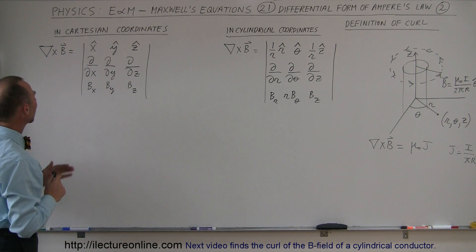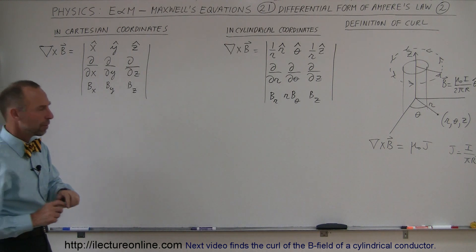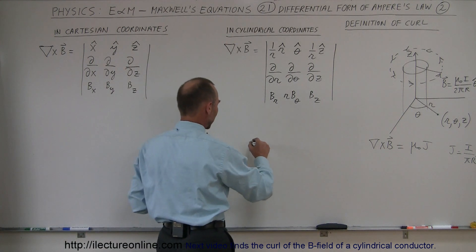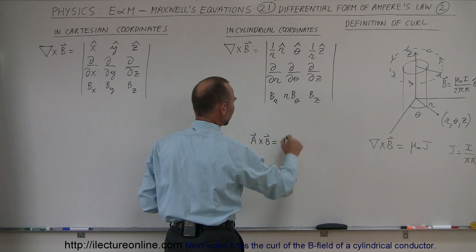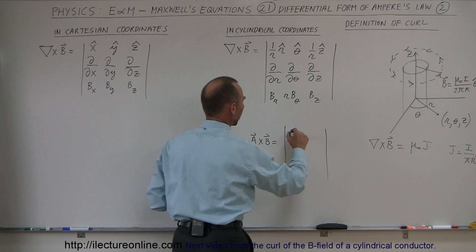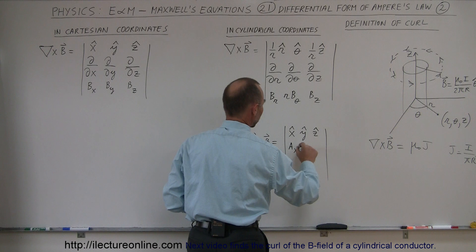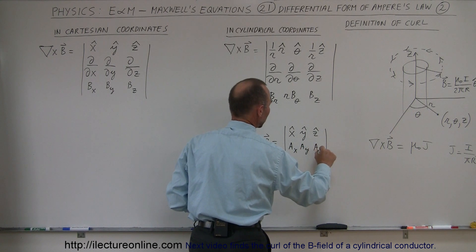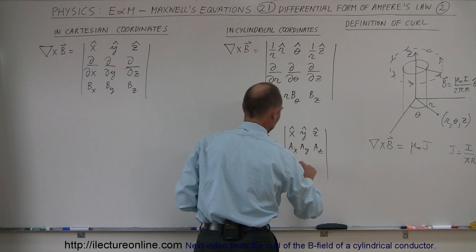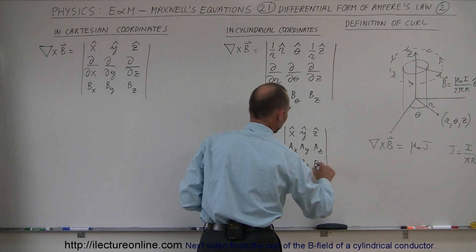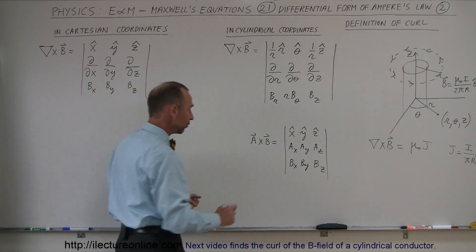You should realize that taking the curl is kind of like taking the cross product of two vectors. If you take the cross product A cross B, that is equal to the determinant of the x, y, z unit vectors in the first row, then a sub-x, a sub-y, a sub-z as the x, y, z components of vector A, and then b sub-x, b sub-y, b sub-z as the x, y, z components of vector B.